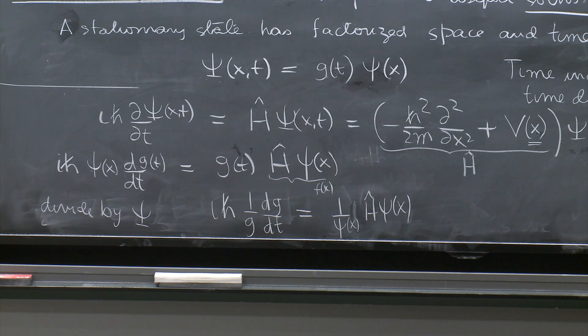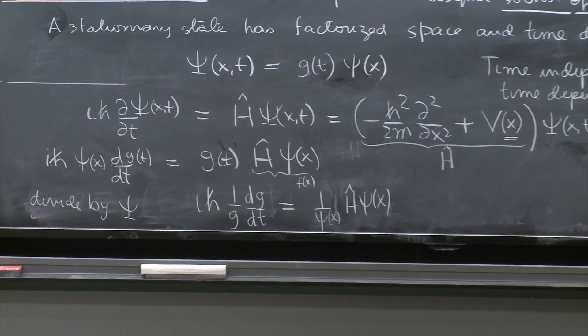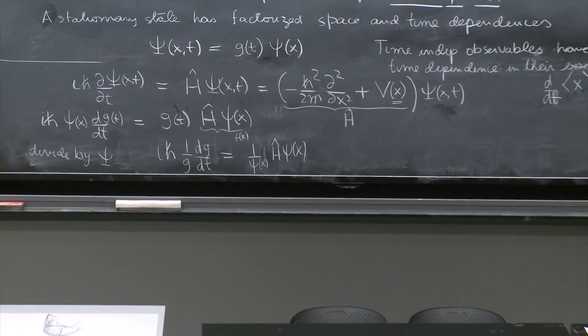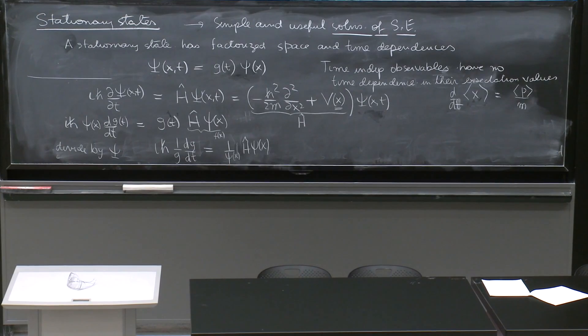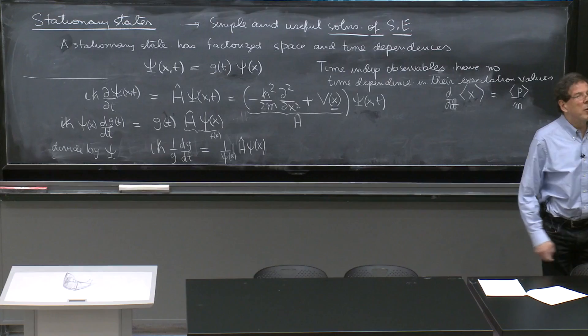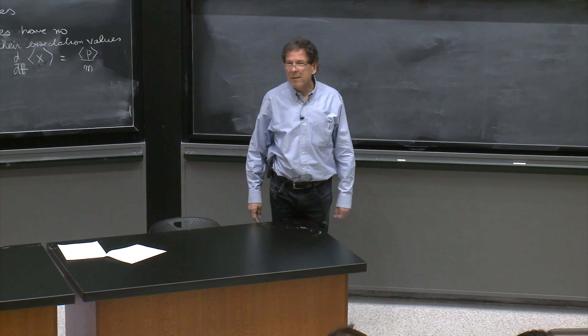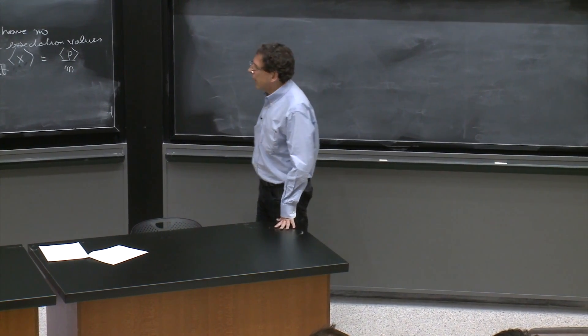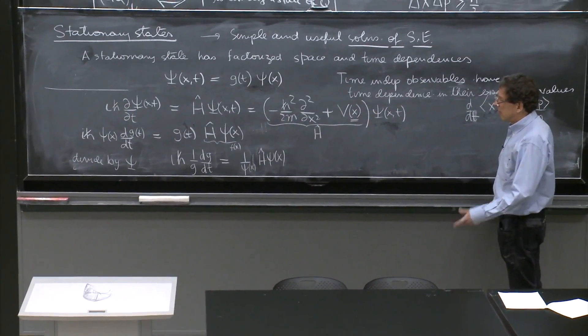And now you look at this equation, and this equation is saying something very strange. The left-hand side is a function of time only. The right-hand side is a function of space only. How can a function of time be equal to a function of space? The only way it can be is if both are not a function of what they were supposed to be. They're just numbers.